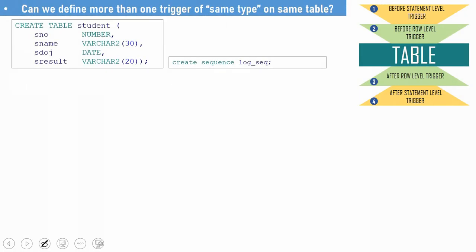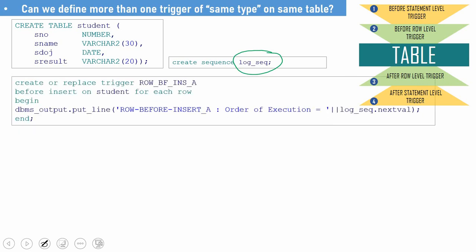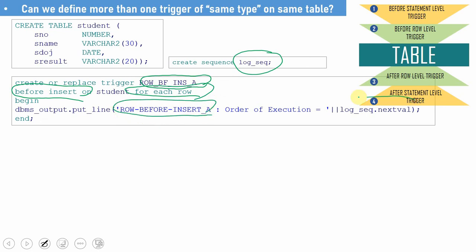I am going to create a table called student and a sequence called log_sequence. I am creating the sequence so that I can print the sequence number from the body of each trigger, making it easy to understand the order in which these triggers get fired. The first trigger I am going to create is named row_level_before_insert_A — a before insert row level trigger. Within the body of the trigger, we are just printing the trigger name and sequence number so we can understand execution order.